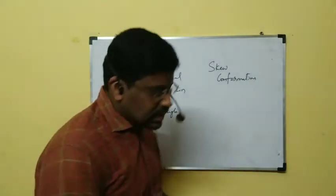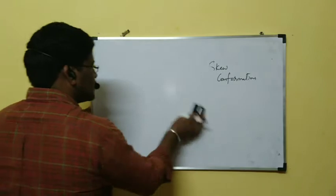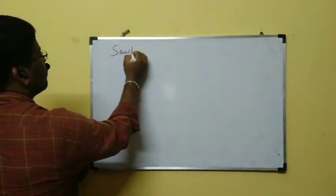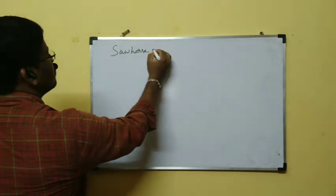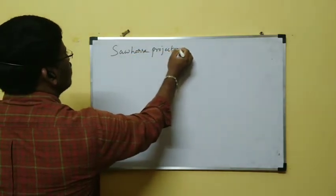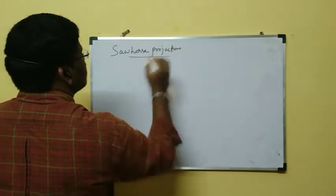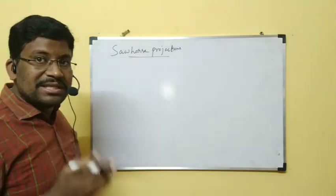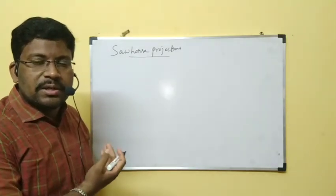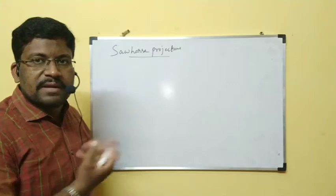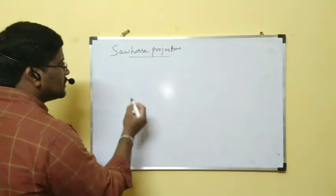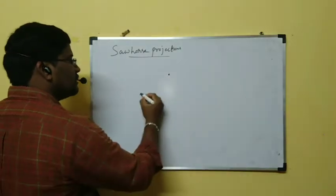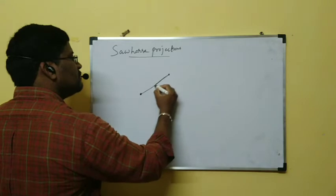First is Sahos representation, or Sahos projection. He represented this form — actually this is three dimensional, but we are drawing on the board in two dimensions. This is the front carbon, this is the rear carbon — they are bonded with a single bond like this.